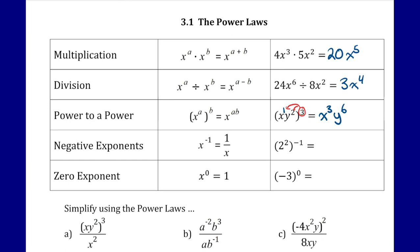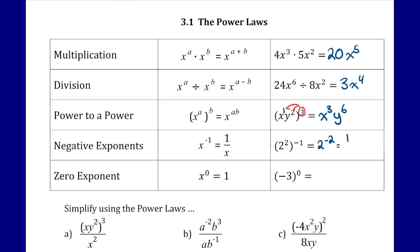For negative exponents we take the reciprocal — we flip the power. If it's a whole number it's always over 1; if it's a fraction we flip the fraction and the exponent becomes positive. In our example, 2 squared all to the power of negative 1: first we apply power to a power, so 2 times negative 1 gives us negative 2. We then flip it to get 1 over 2 to the power of 2, making the exponent positive. Evaluating: 2 squared is 4, so this equals 1 over 4.